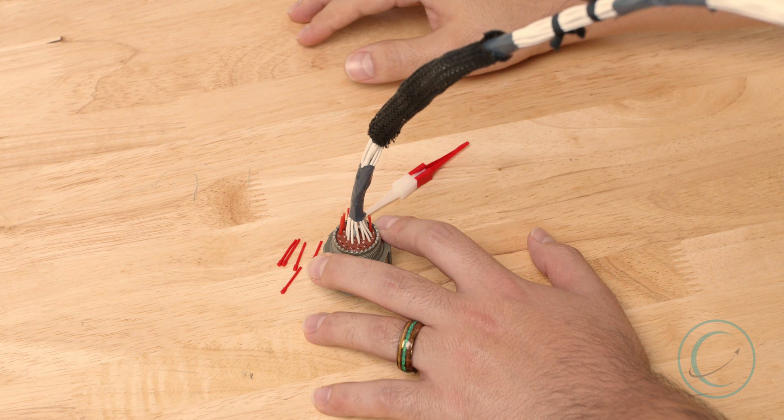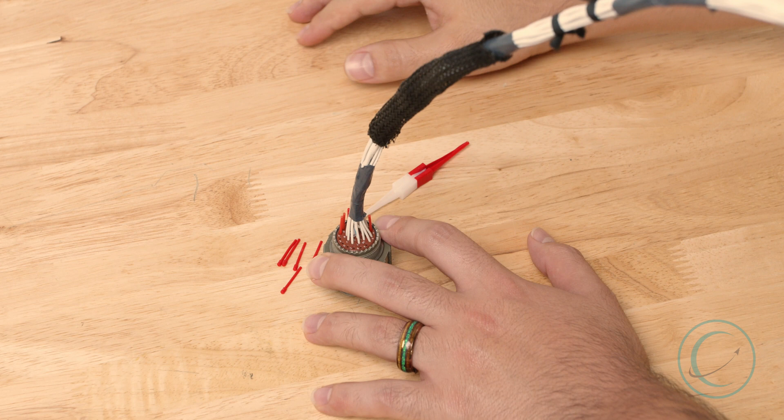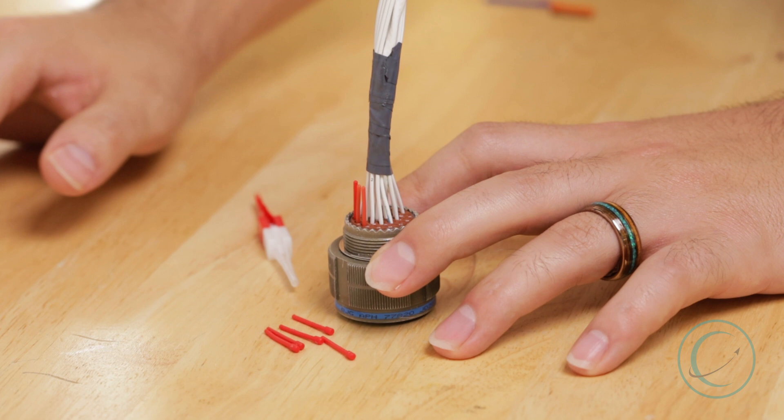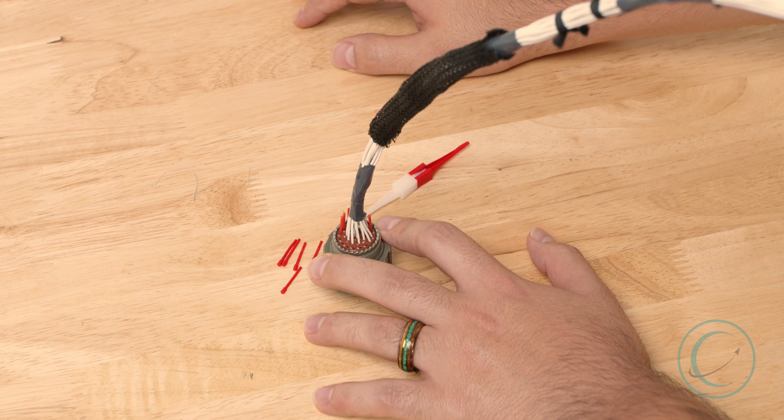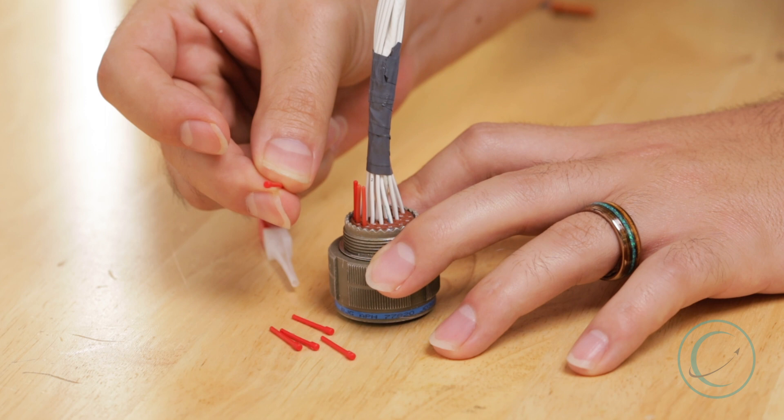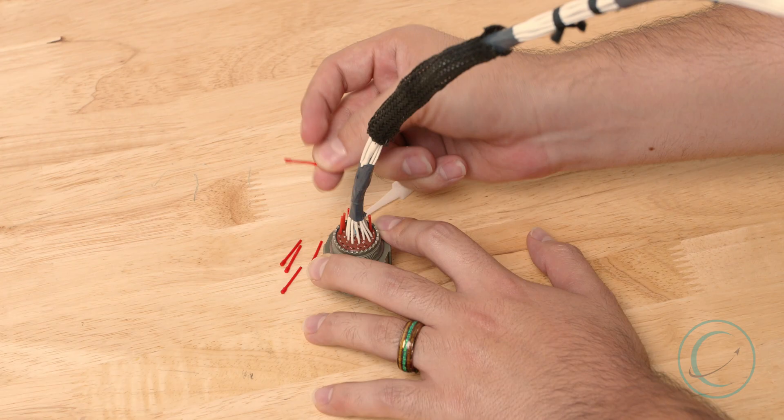Previously we had a vlog where Steve taught you how to crimp a contact and how that was inserted into a connector. However, sometimes all the cavities of a connector will not be used when assembling a wiring harness. In this case, the customer often asks to fill the unused cavity with a filler plug or a filler contact in the connector.